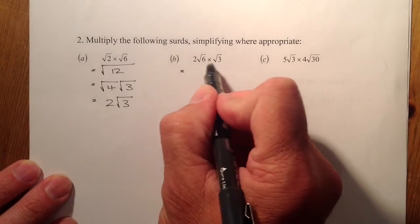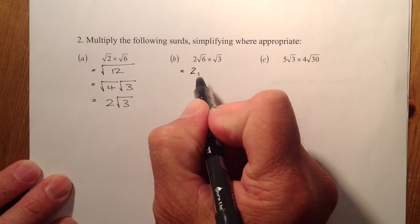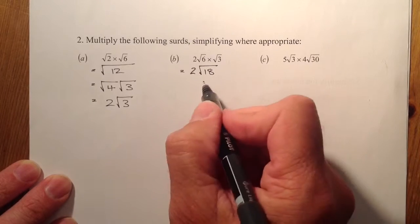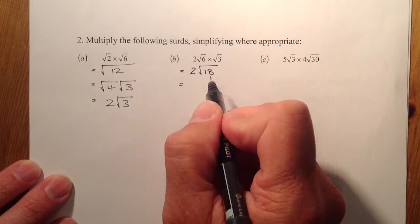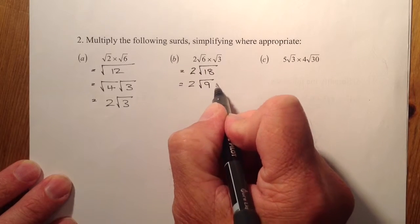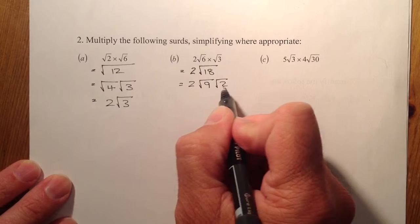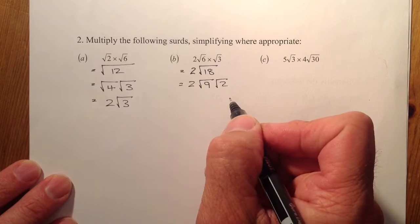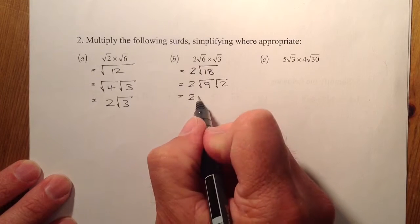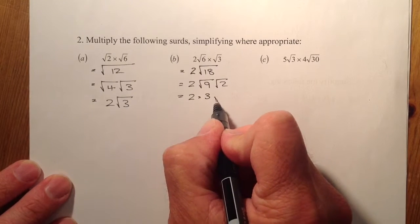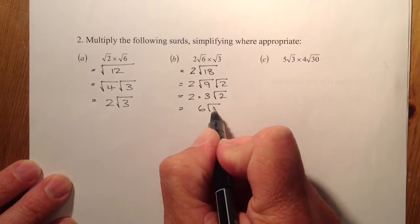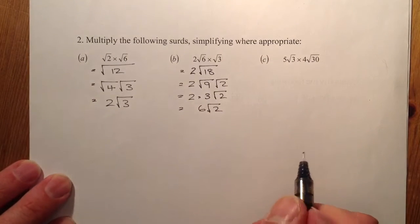Moving on to b, multiplying the surds. I've got 2 times root 9 times root 2, giving root 18. Root 18 can break down into root 9 and root 2, because those multiply together to give root 18. The square root of 9 is just 3, and I've got root 2 sitting there. So 2 times 3 gives me 6, and it'll be 6 root 2 as the solution.